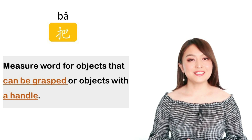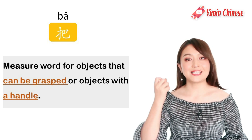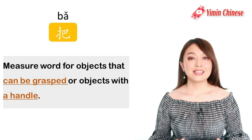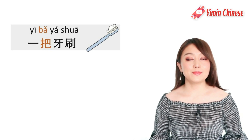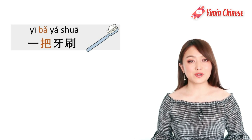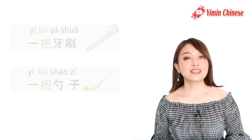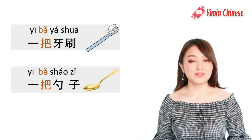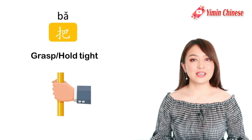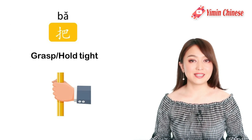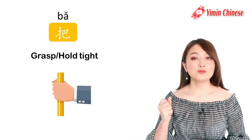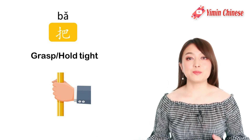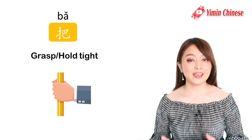把 is for objects that can be grasped, or objects with a handle, like 一把牙刷, a toothbrush, or 一把勺子, a spoon. 把 itself is a verb meaning 'grasp' or 'hold tight', and then it extended to the meaning of 'a handle'.